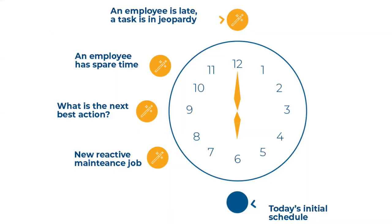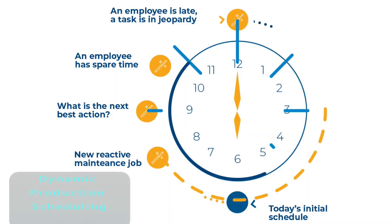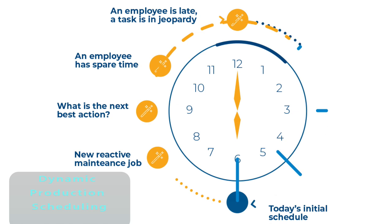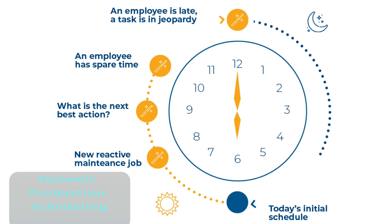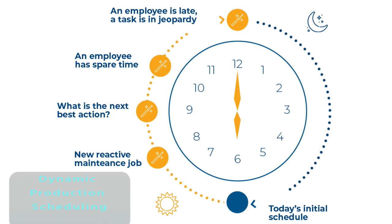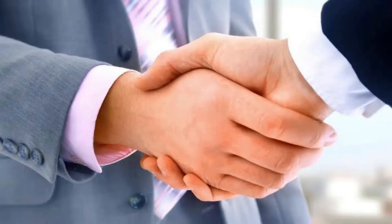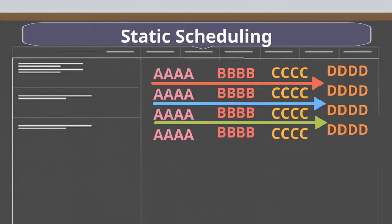Many companies follow dynamic production scheduling, which is a reactive way of scheduling production in reaction to the demand. Dynamic production scheduling is not a very good system, and a lot is left to the people involved. You need to have a good relationship with the production manager to get your items faster. As against this, a static production scheduling is much better.